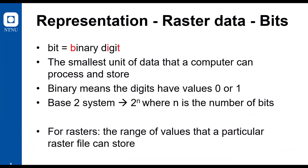For representation of raster data, bit is a central concept — it is short for binary digit and is the smallest unit of data that a computer can process and store. Binary means that the digits have values of zero or one, on or off, just like a light switch. This is a base-two system, often denoted as 2 with an exponent n, where n is the number of bits, representing the range of values a particular raster file can store.